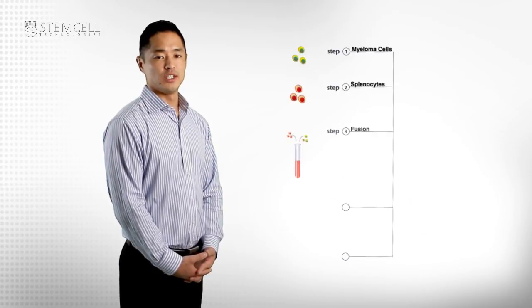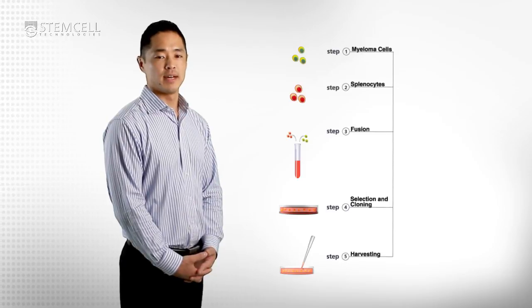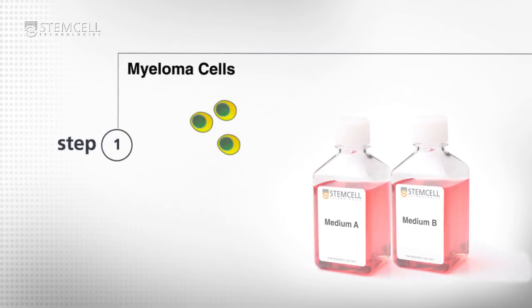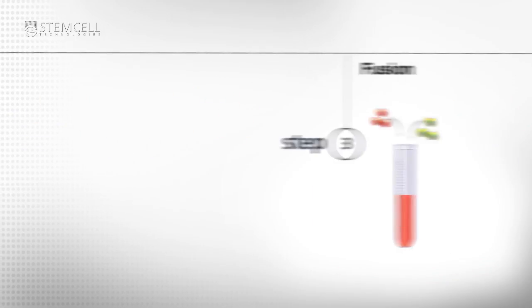The detailed procedure can be found in the Clonacell HY hybridoma cloning kit technical manual. Steps covered in this video include preparation of myeloma cells, preparation of splenocytes, fusion, selection and cloning, and harvesting.